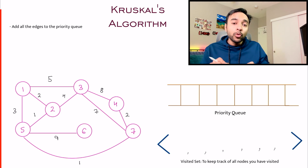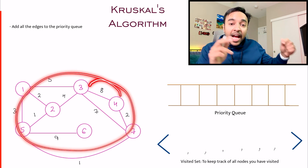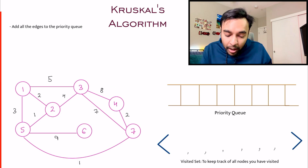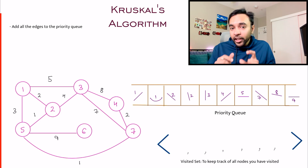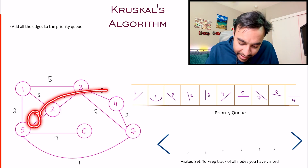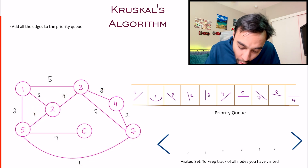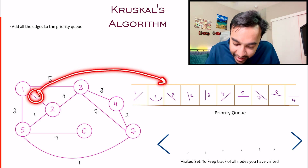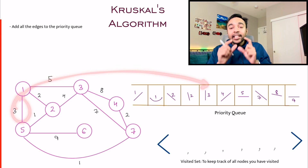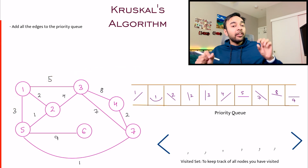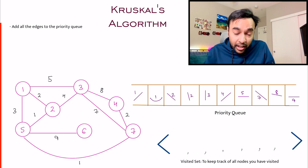The first step in Kruskal's algorithm is to take all the edges and add them to the priority queue. All of these edges are now sorted by weight in the priority queue. Each edge has information about the source and destination as well — that is how you define the edge structure. Now your setup is complete.